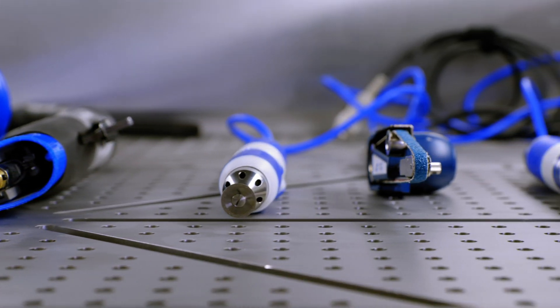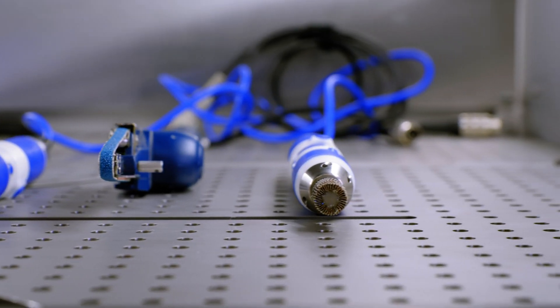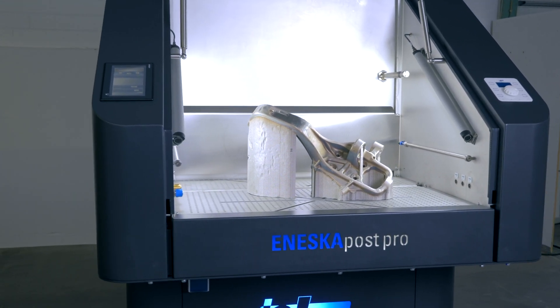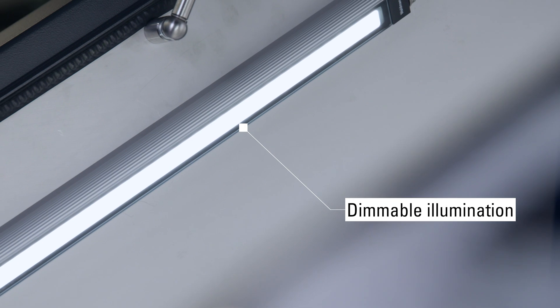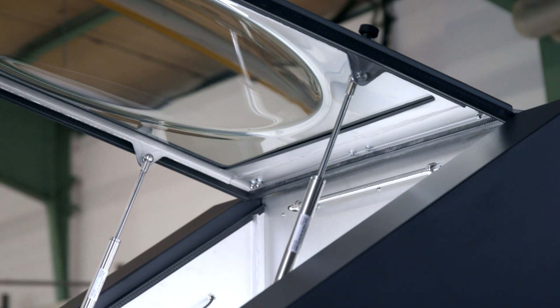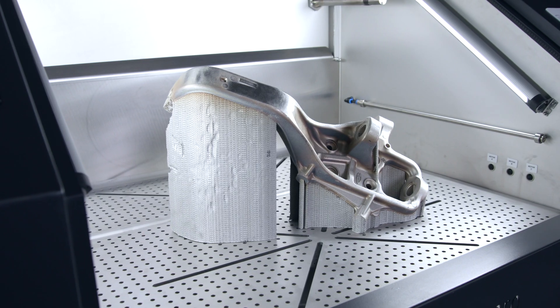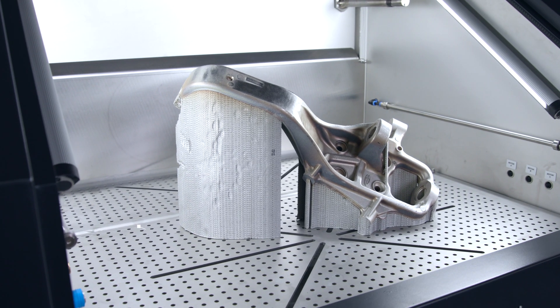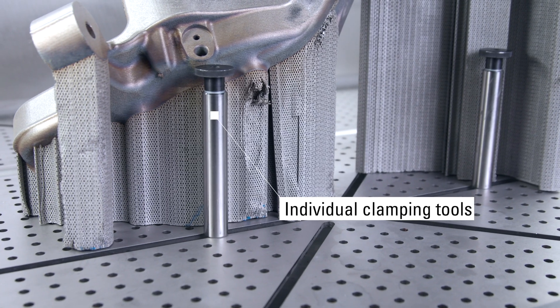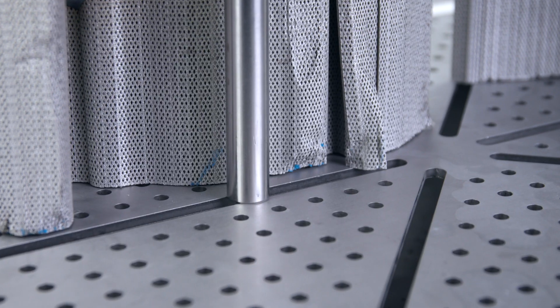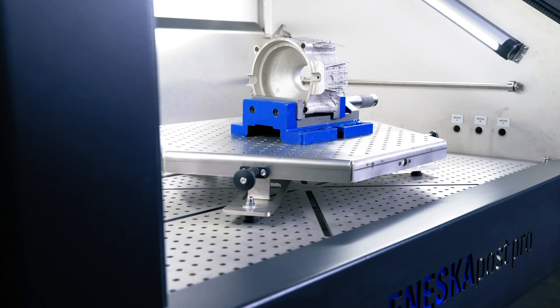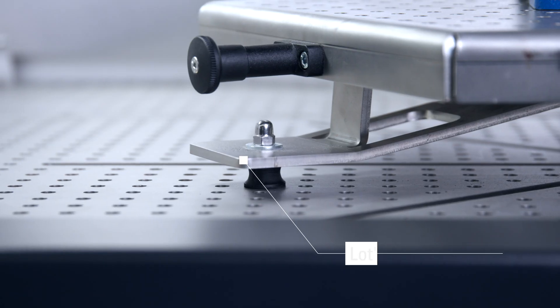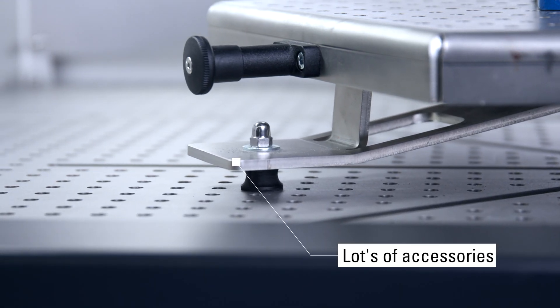The work chamber, completely equipped with dimmable LEDs, offers sufficient space and freedom of movement. Even large components can be processed with ease. Individually adjustable fixing aids prevent workpieces from slipping away. Additional accessories such as magnetic clamping, ball turntable, or clamping tables can be easily integrated.